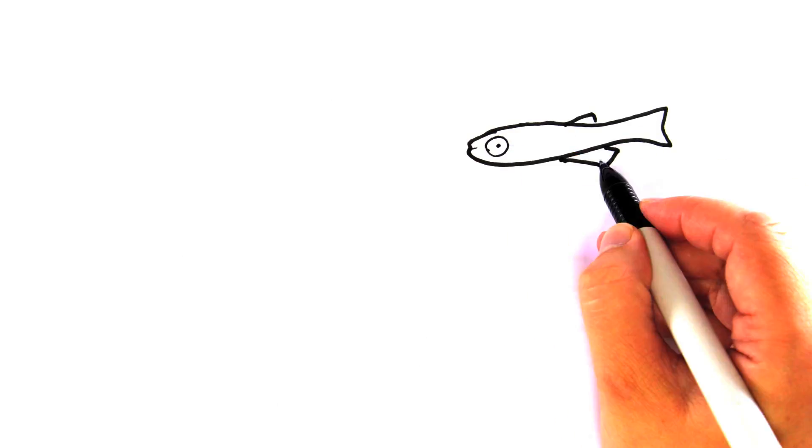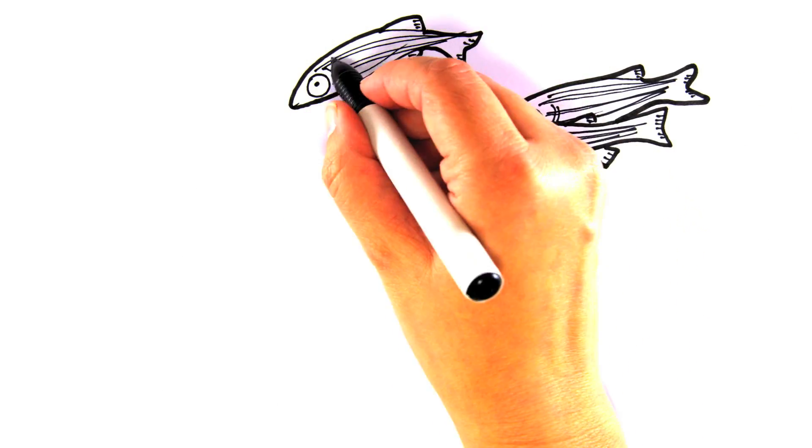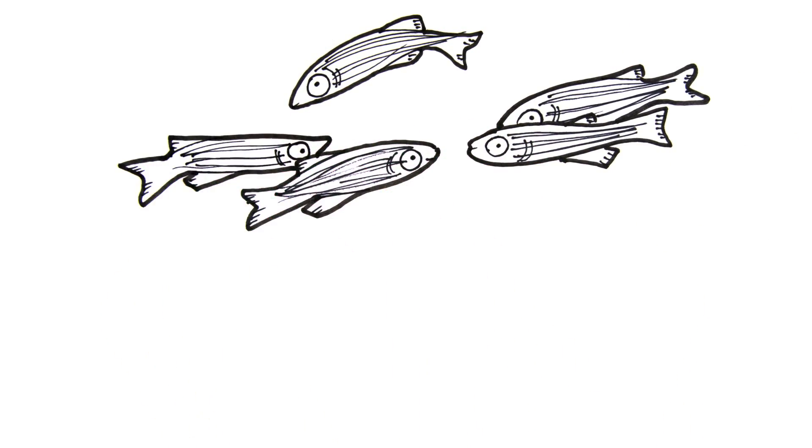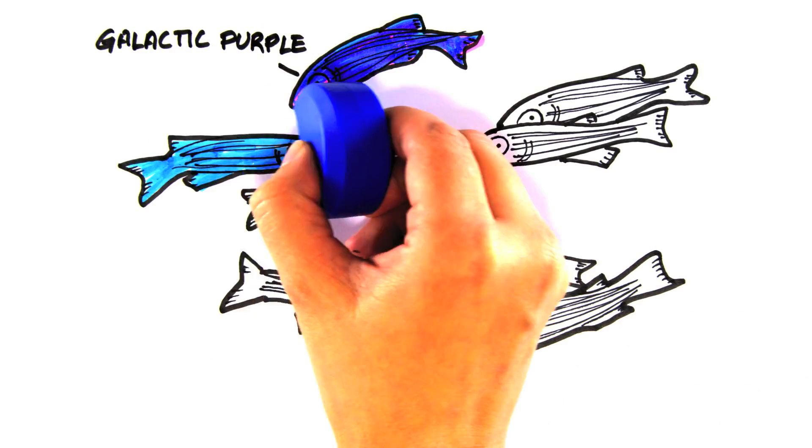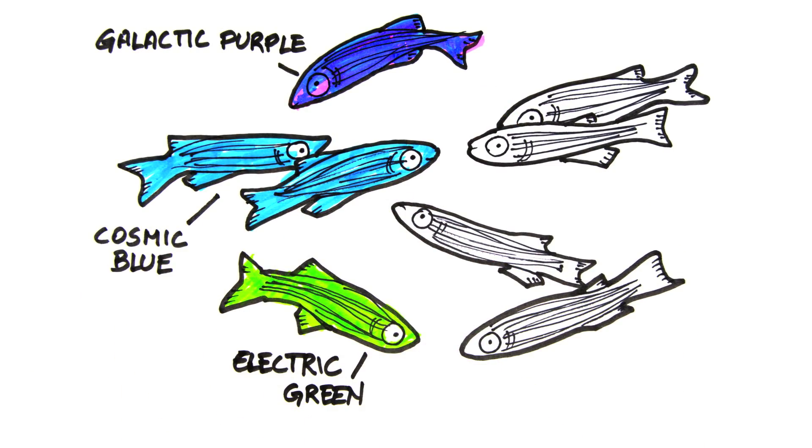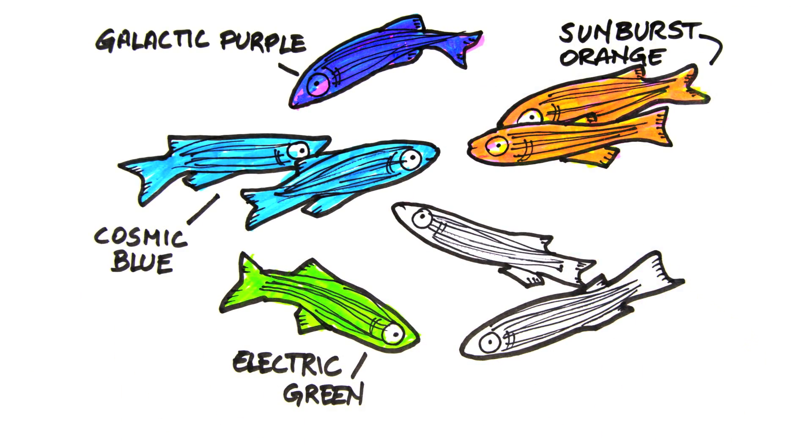Meanwhile, even aquarists have taken an interest in the exciting implications of zebrafish engineering. Glowfish is a zebrafish that has been genetically modified to express fluorescent proteins in all tissues. It comes in a variety of bright colors and glows in the dark.